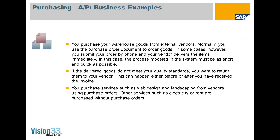You purchase your warehouse goods from external vendors, and normally you use the purchase order document to order goods. In some cases, however, you submit your order by phone and your vendor delivers the items immediately. In this case, the process modeled in the system must be as short and as quick as possible, meaning you don't have to start with a purchase order.